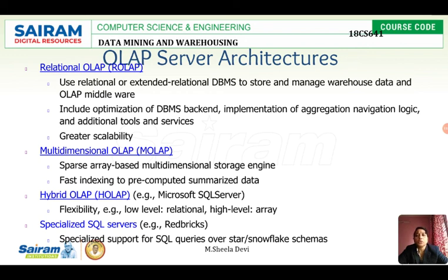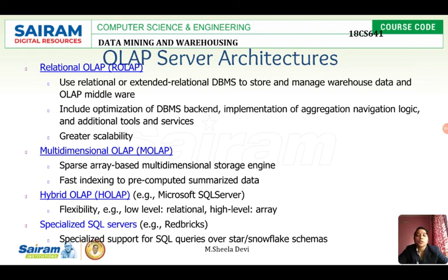To overcome the disadvantages of both — ROLAP's lack of dynamic multi-dimensional view and MOLAP's limited data volume — a new architecture called hybrid OLAP was invented, combining both ROLAP and MOLAP. All advantages of both architectures are available in hybrid OLAP. An example of hybrid OLAP is Microsoft SQL Server. Its advantages include flexibility, the ability to store large amounts of data, and dynamic multi-dimensional views.